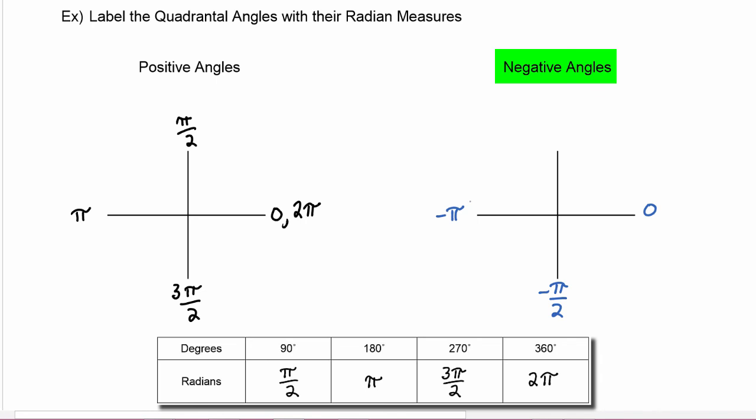Negative π, negative 3π/2, and all the way around would be negative 2π.